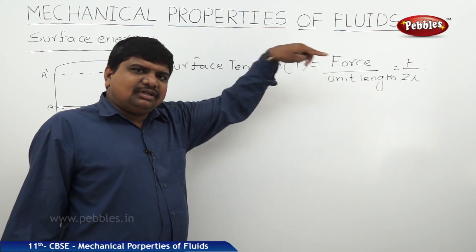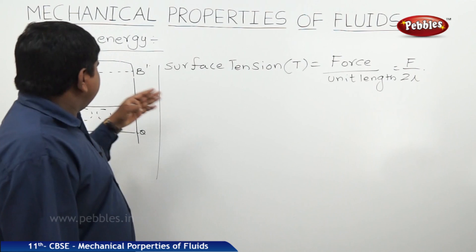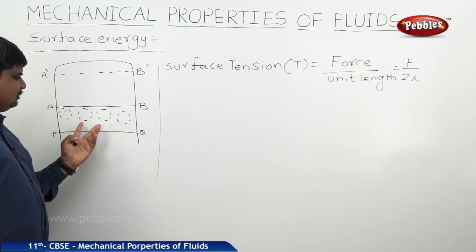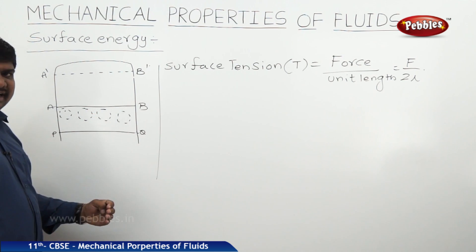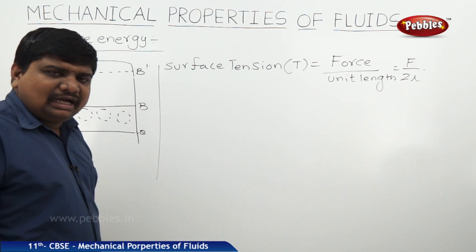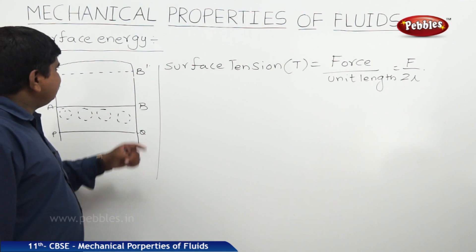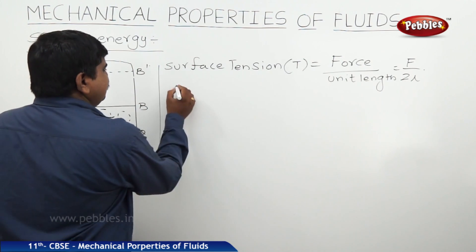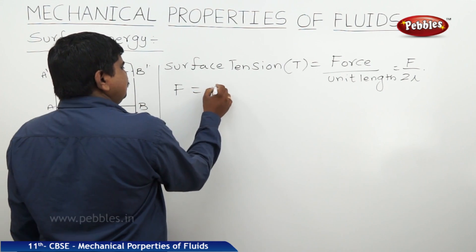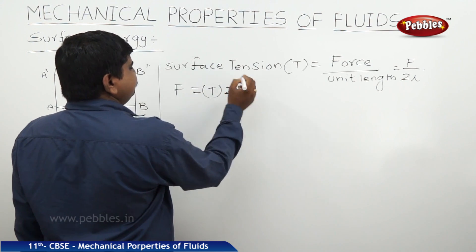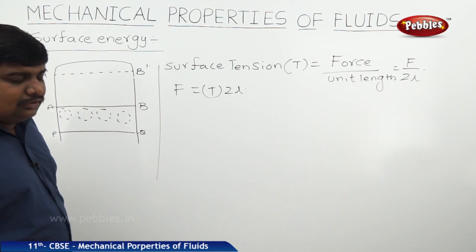We need to find out the amount of force required to increase the surface energy or surface area of a bubble or of anything to 1 meter under the isothermal condition. It is nothing but the surface energy. Therefore, F is equal to tensional force into 2L.